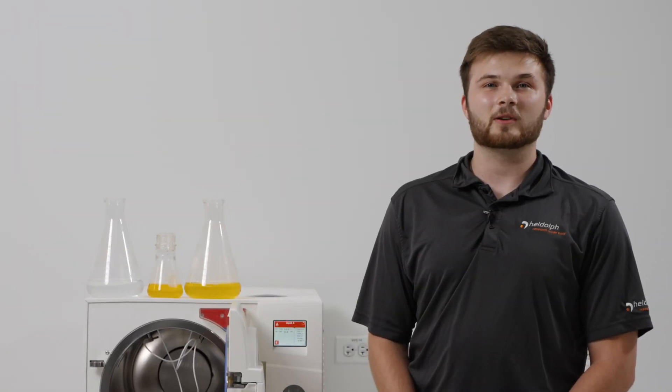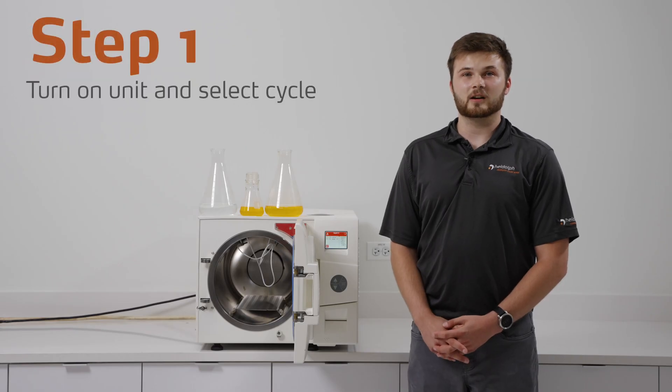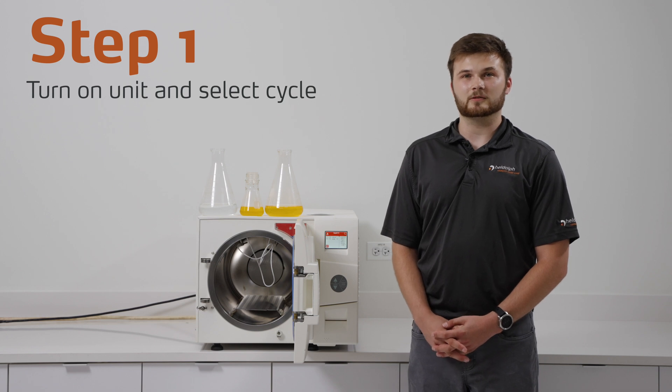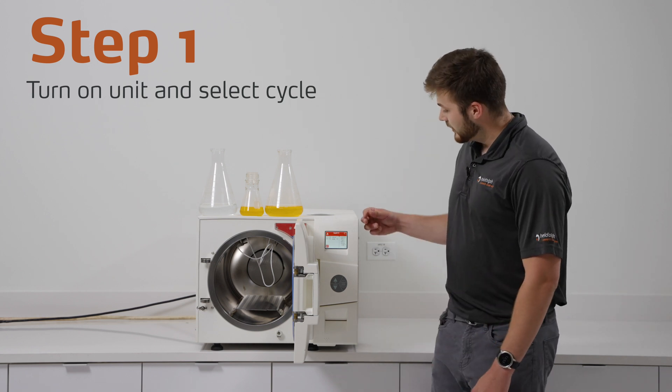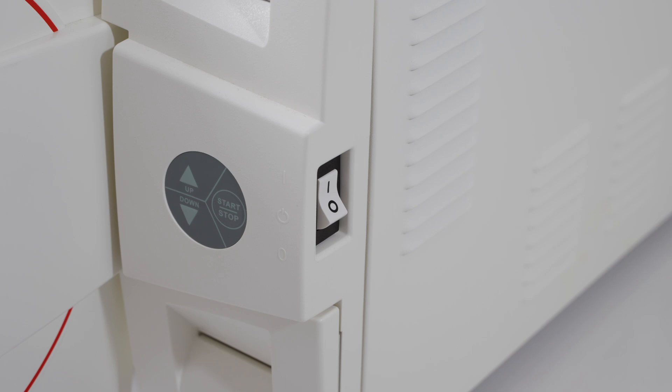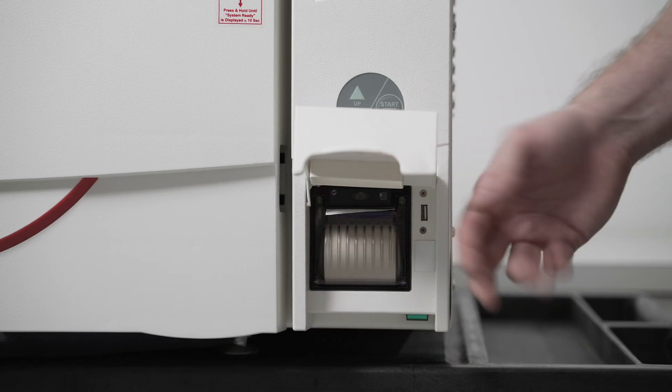Now let's go over the process for sterilizing liquids. The first step is to turn on your unit and select the appropriate cycle. On 2840 models, the power switch can be found on the right-hand side of the unit. On all other LabLine models, the power switch is located under the printer.